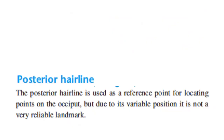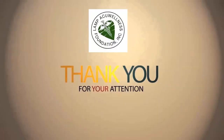Next, we have the posterior hairline. The posterior hairline is used as a reference point for locating points on the occiput, but due to its variable position, it is not a very reliable landmark.